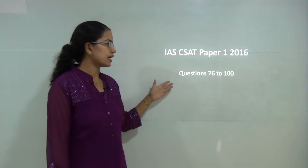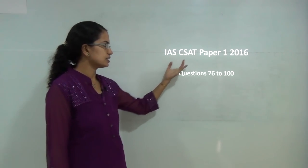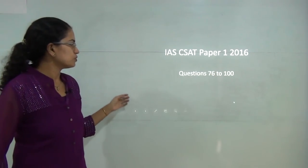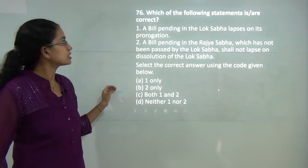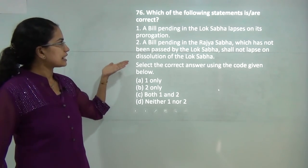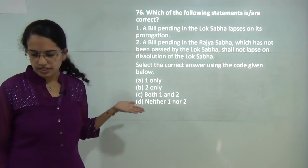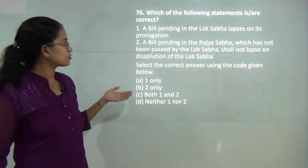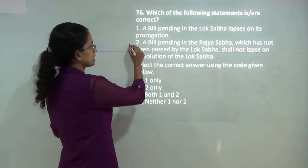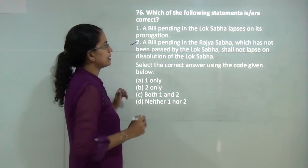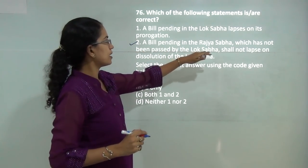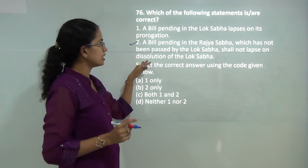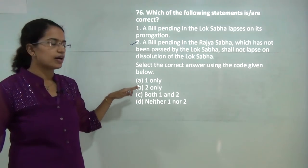In this session we will start with the final set for the CSET Paper 1, that is General Studies. The first question asks which of the following statements is correct. Out of the two statements given, the second statement is correct: a bill pending in Rajya Sabha which has not been passed by the Lok Sabha shall not lapse on the dissolution of Lok Sabha.